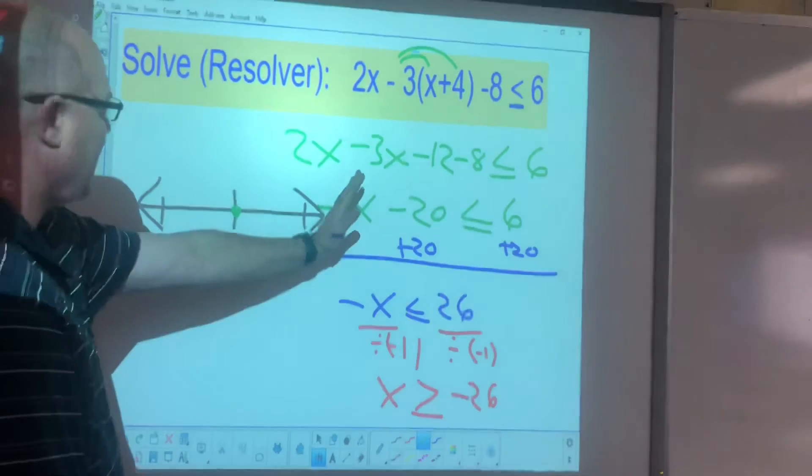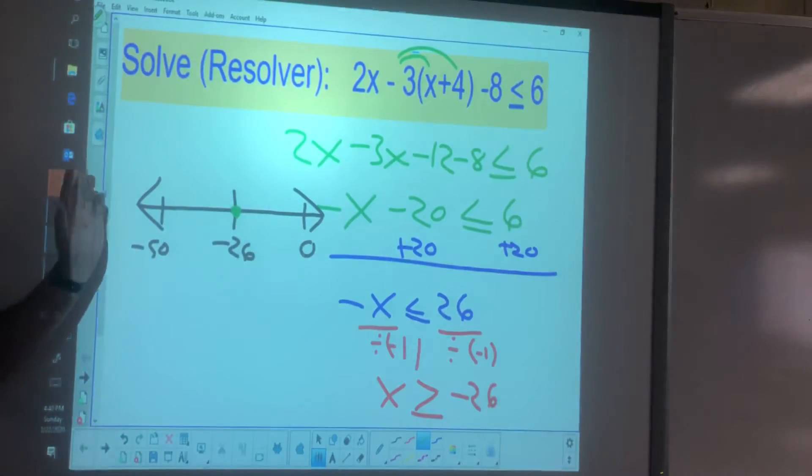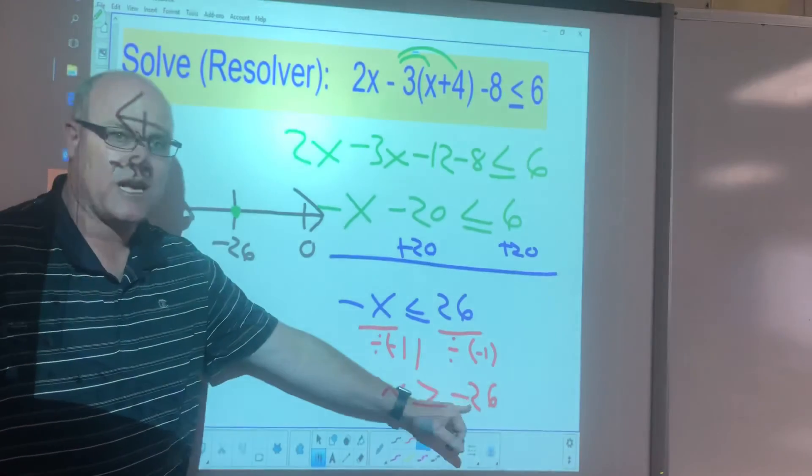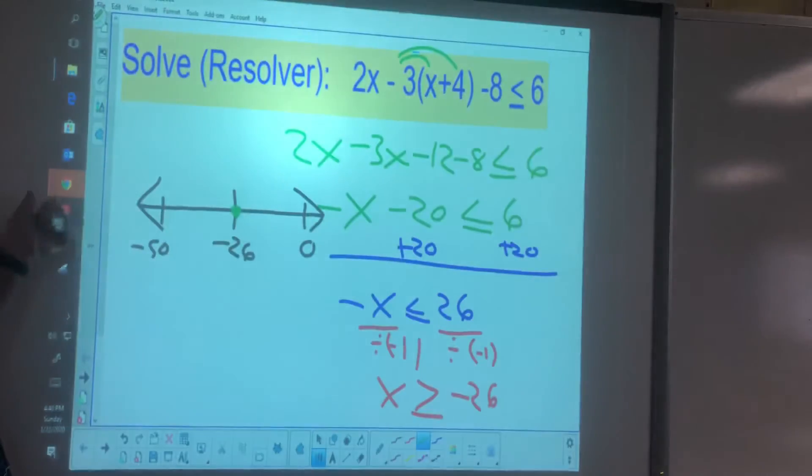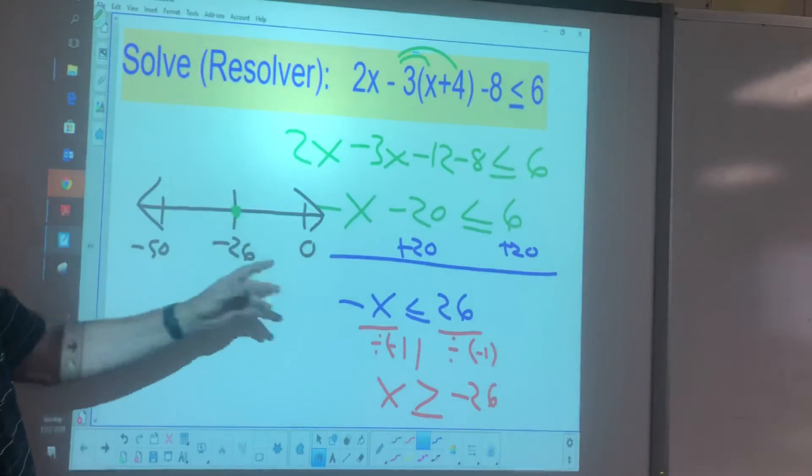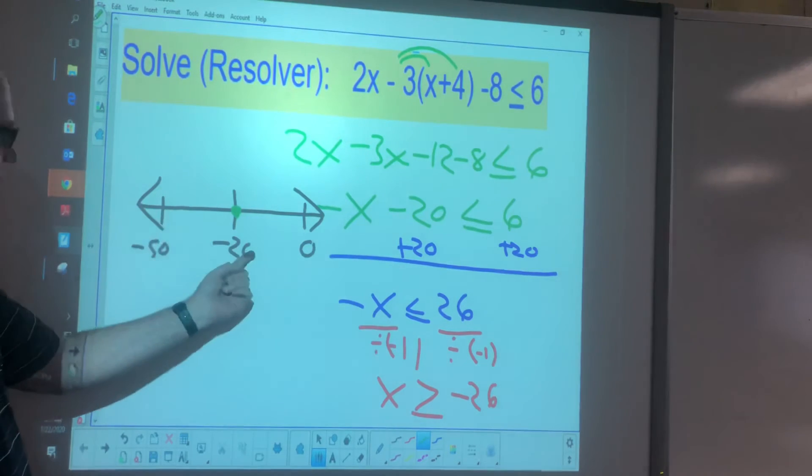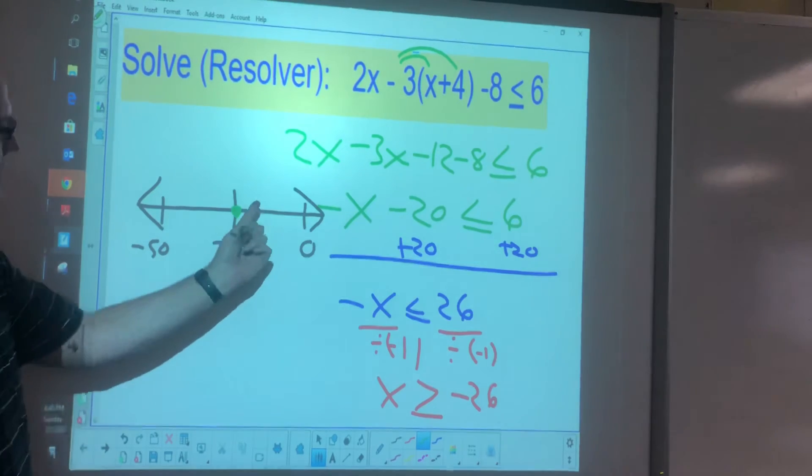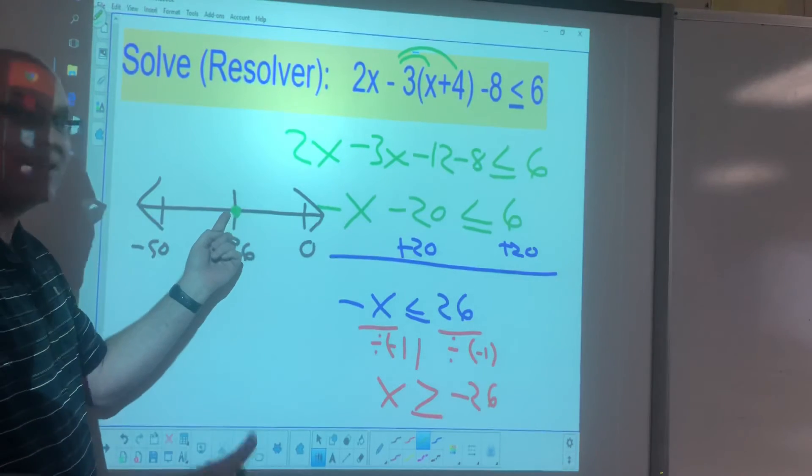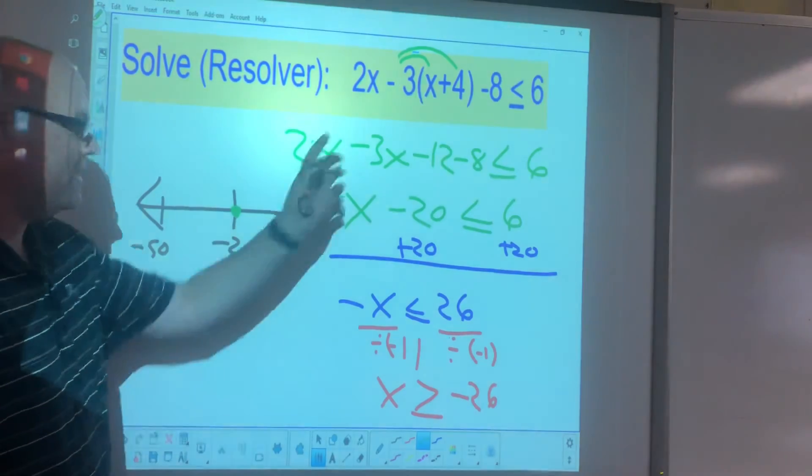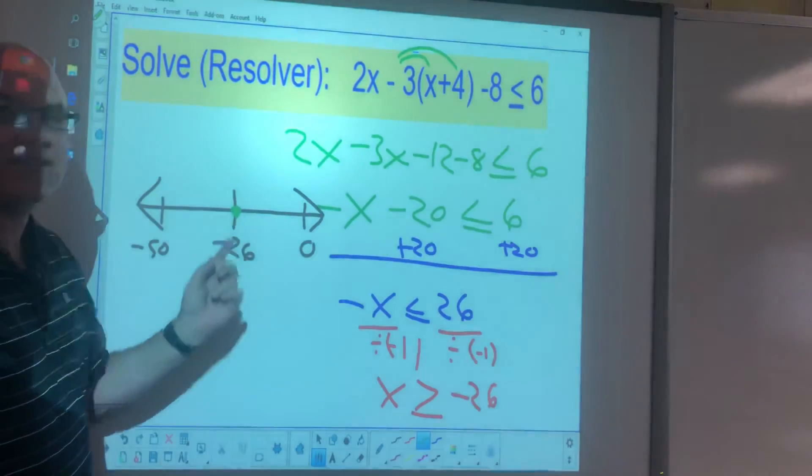So now the solution is either this side or this side. You got to ask yourself, what values of x are going to be greater than or equal to negative 26? Is it as you go to the left or as you go to the right? Well, think about it. Is negative 27 bigger than negative 26? No, it's smaller. Is negative 50 bigger? No, it's smaller. Is negative 20 bigger than negative 26? Yes. Is zero bigger than negative 26? Yes. Is a million bigger than negative 26? Yes.